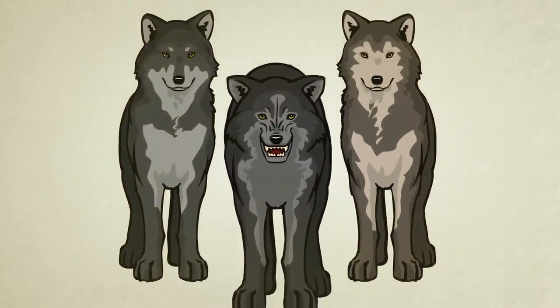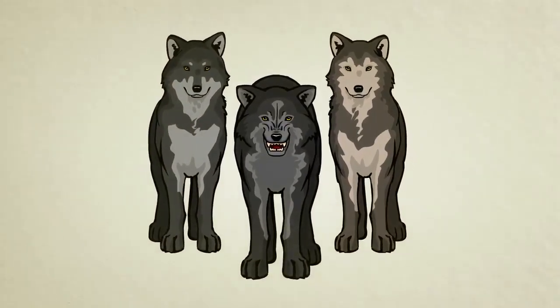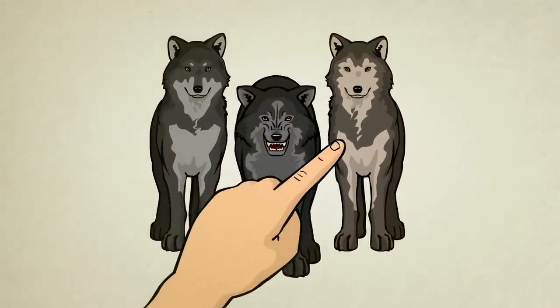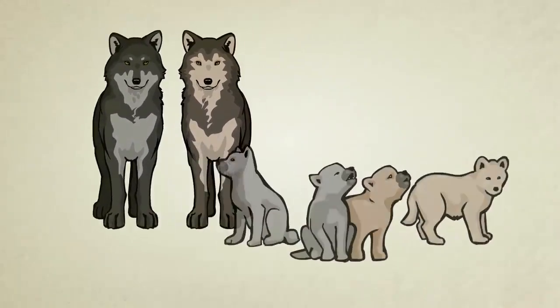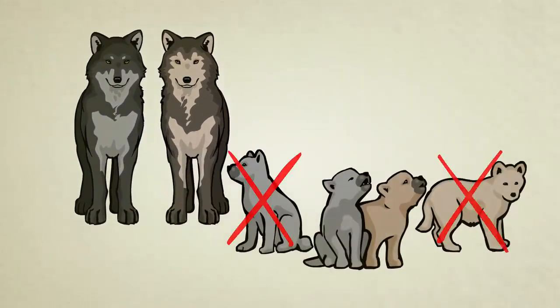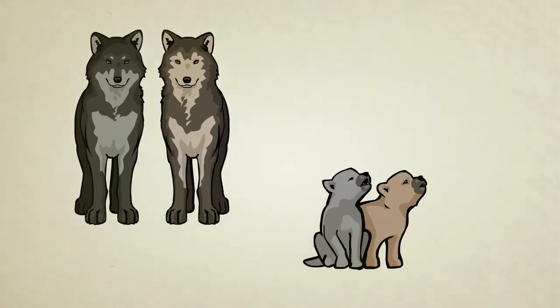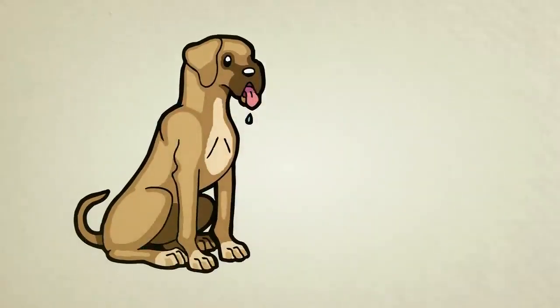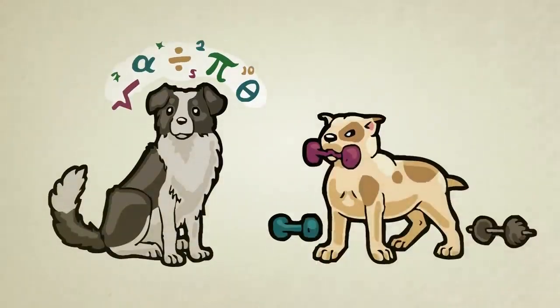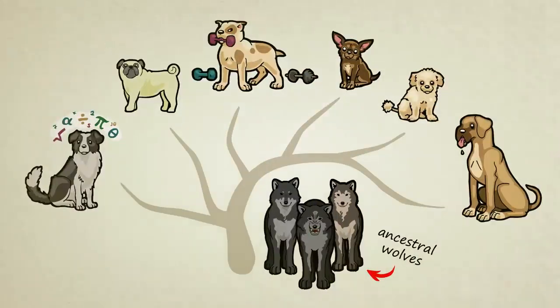The evolution of those wolves from generation to generation was guided by humans. People were selecting wolves with the traits they liked, letting them breed, and then only keeping the puppies with the most desirable traits. As time went on, different breeders preferred dogs with different features — some selected for large size, some for small size, some for brains, others for brawn. Today, wolves have branched out into hundreds of breeds, very few of which look and behave much like their ancestors.